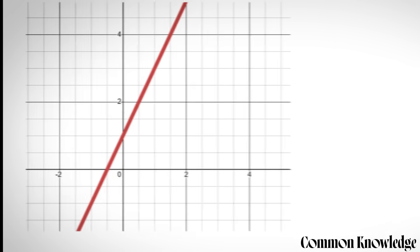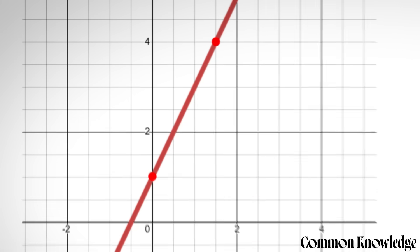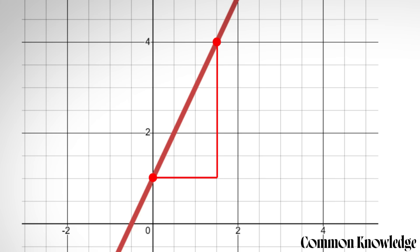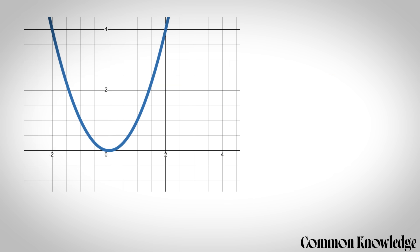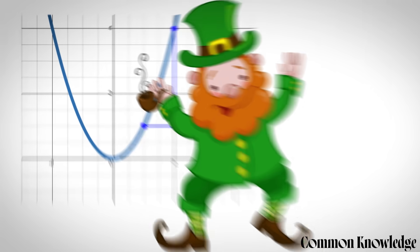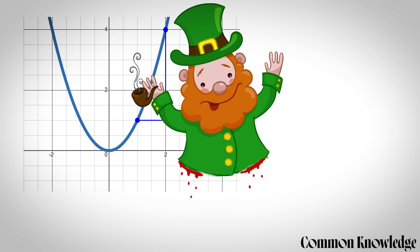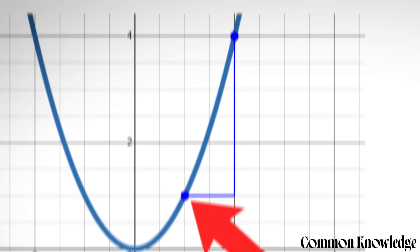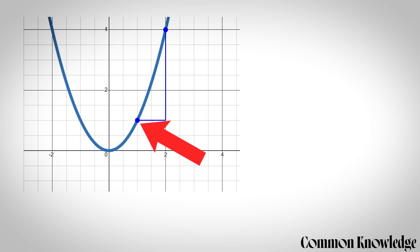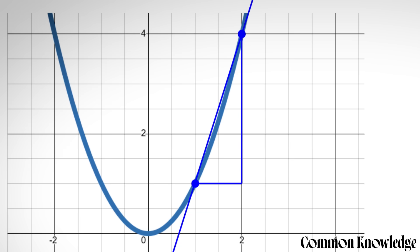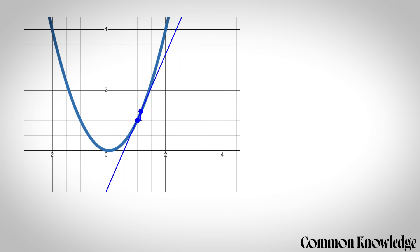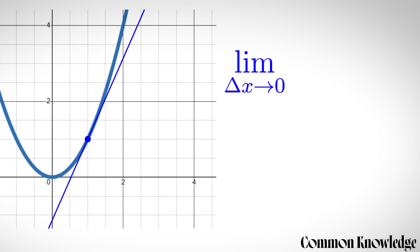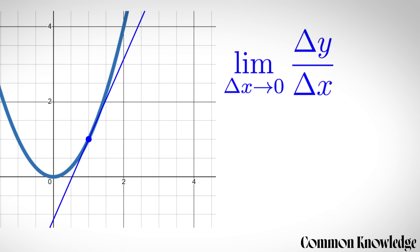AP calculus: to find the steepness of a straight line you take any two points on the line, form a right angle triangle, and use the equation change in y over change in x to get the gradient. But if the line is curved and you want to find the gradient, you can't just pick any two points, because the gradient at one point is different to the gradient at another. So to find the gradient at a specific point, you move the other point closer and closer, and the closer you get the more accurate the gradient. To find the exact gradient we want the limit as the change in x tends towards zero of the change in y over the change in x.